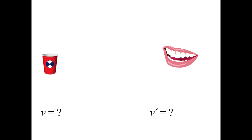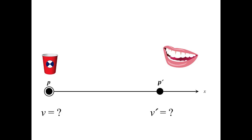Let's look at a fairly familiar task: bringing a cup from arm's length to your mouth to take a sip. What is the velocity of that cup at the start? The velocity is going to be zero. The cup moves from its initial position to its final position, and when it gets to your mouth the velocity had better be zero — because if it's not, you're going to be in for some pretty intense dental work. So in a lot of human activities, we have movement that starts with zero velocity and ends with zero velocity.